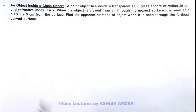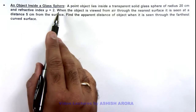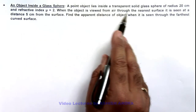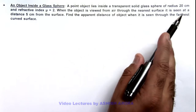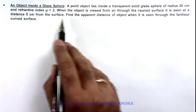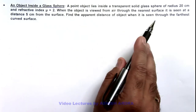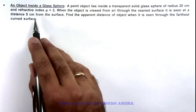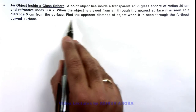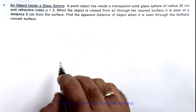In this illustration we'll discuss an object inside a glass sphere. A point object lies inside a transparent solid glass sphere of radius 20 centimeter and refractive index 2. When the object is viewed from air through the nearest surface, it is seen at a distance of 5 centimeter from the surface. We are required to find the apparent distance of the object when it is seen through the farthest curved surface.